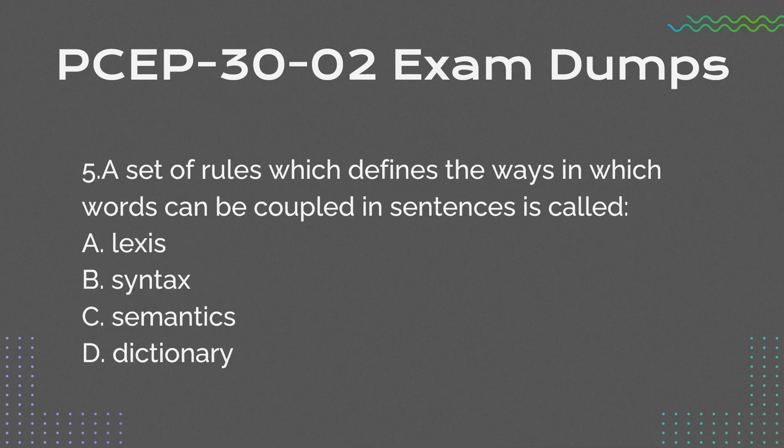Question 5: A set of rules which defines the ways in which words can be coupled in sentences is called: a. Lexis. b. Syntax. c. Semantics. d. Dictionary.